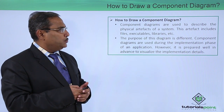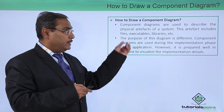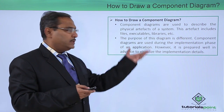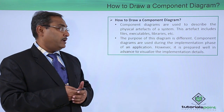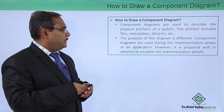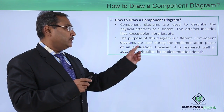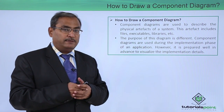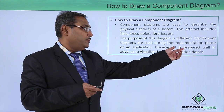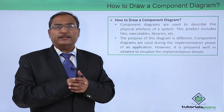Component diagrams are used to describe the physical artifacts of a system. These artifacts include files, executables, libraries, and so on — these are the different components which will build up the system. The purpose of this diagram is different. Component diagrams are used during the implementation phase of the application, but they are to be prepared well in advance to visualize the implementation details.